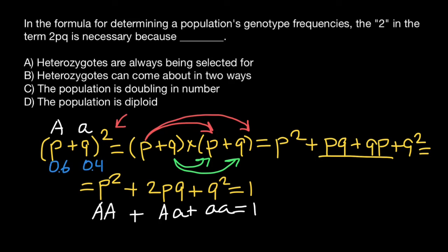We can build simple Punnett square in order to find all the probable genotypes in this population. So capital A, small a, capital A, small a, and we build simple Punnett square.